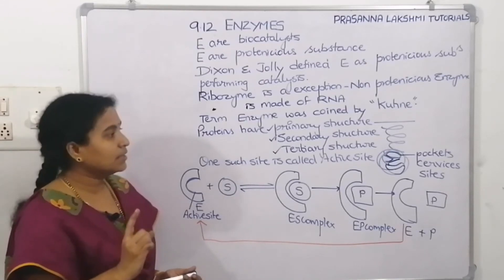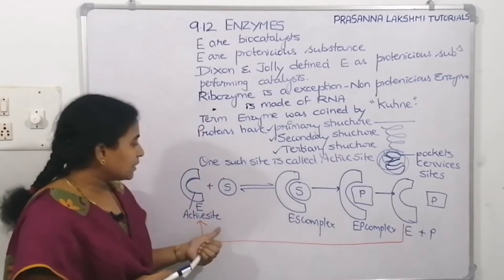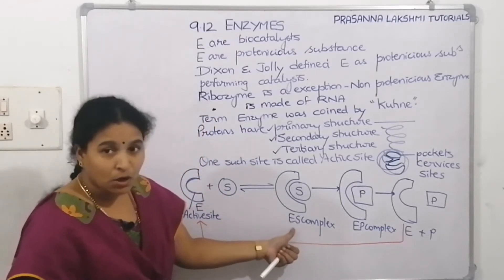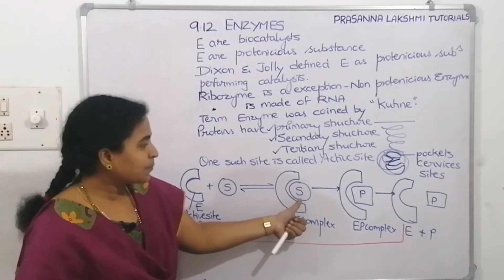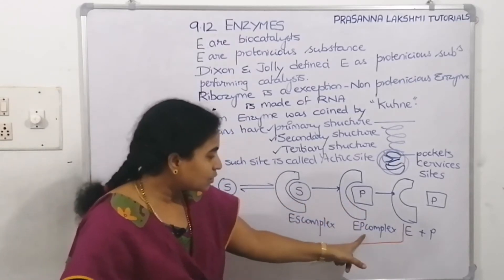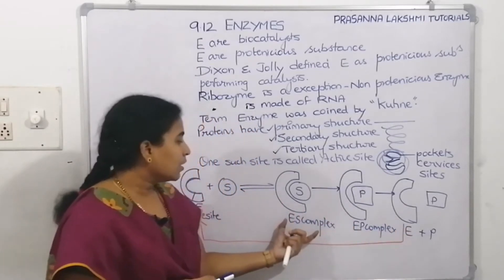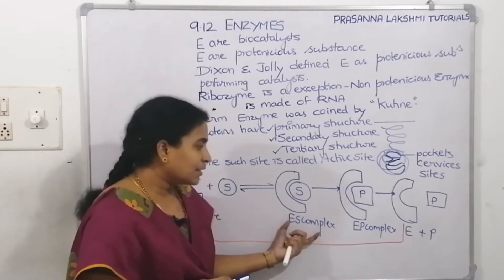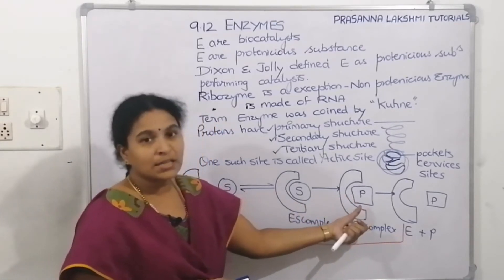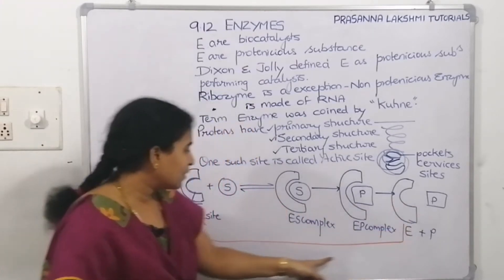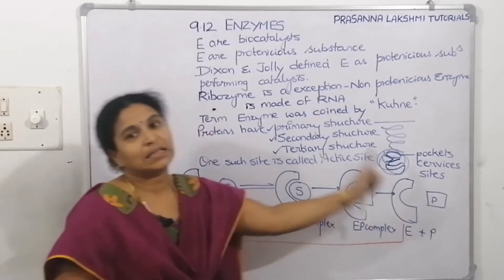The equation is: E + S → ES complex → EP complex → E + P. The ES and EP complexes are transition states. Once the product is formed, it is released and the enzyme is once again ready to take up another substrate for another round of the catalytic cycle.